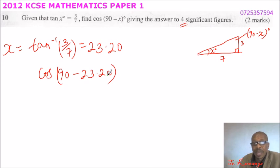And just say cosine, you put the bracket, 90 minus 23.20, and you close the bracket. That should give you 0.3941.